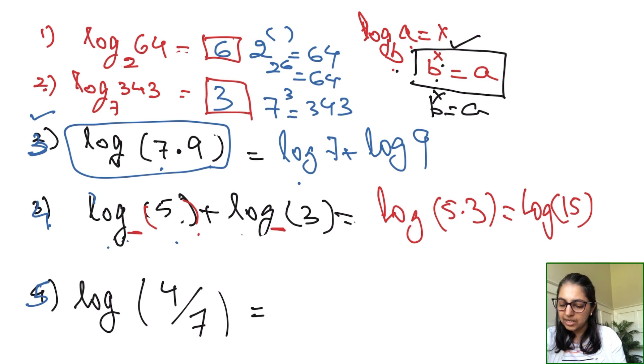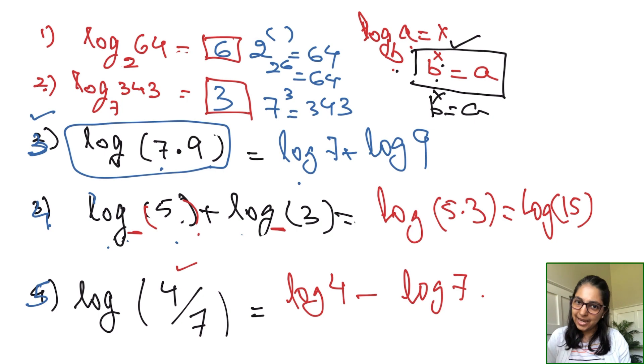Next example is a quotient rule. It is a fraction log(4/7), and it will be written as whatever is the numerator, log of the numerator minus the log of the denominator. This is in condensed form.